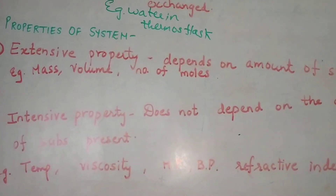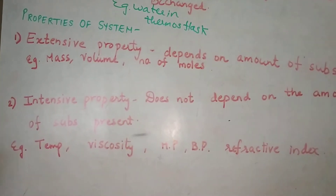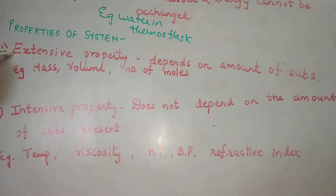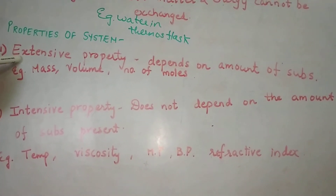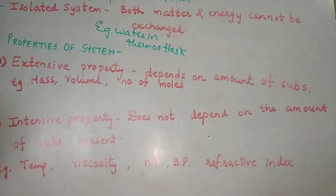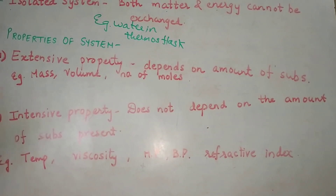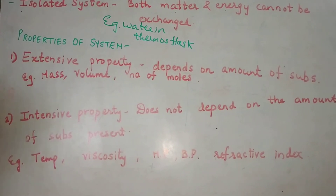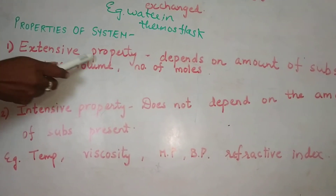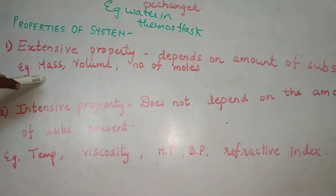Next is the properties of a system — the part where thermodynamic change is taking place. A system can have either an extensive property or an intensive property. An extensive property is one where the system depends on the amount of substance present. Examples of extensive properties are mass, volume, and number of moles.